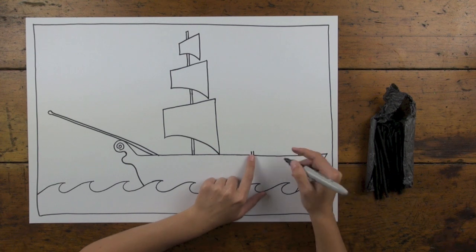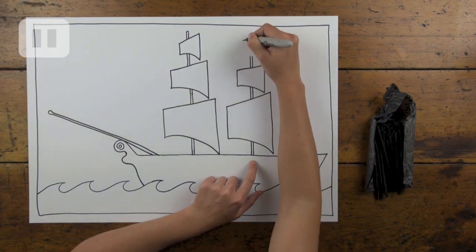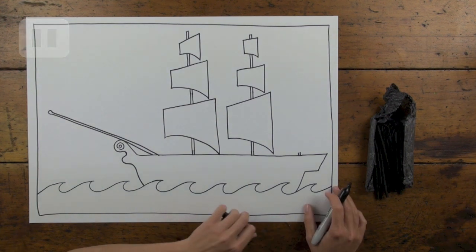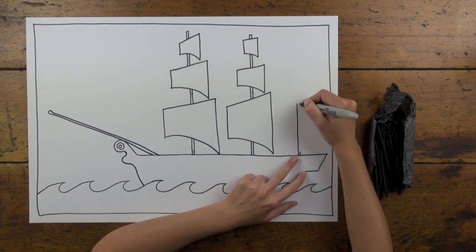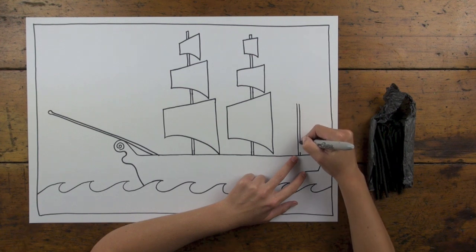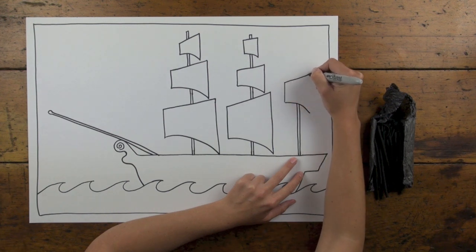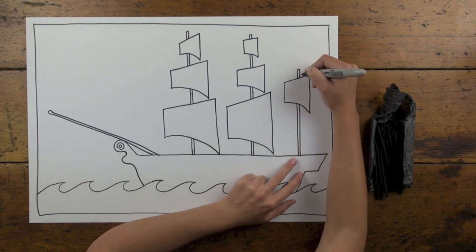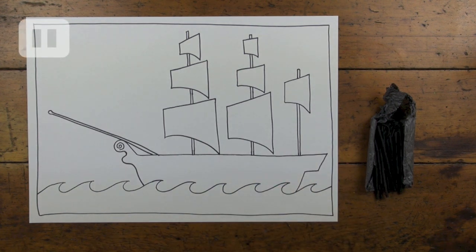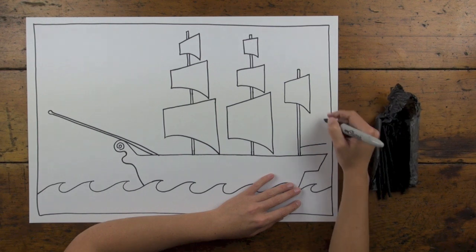I'm going to do the same thing using this pole here. And then on the last pole here, I'm going to extend it up further. And then I'm going to create the same shape, but just one sail at the back here. I'm going to add a sail that comes off the back of the ship as well.